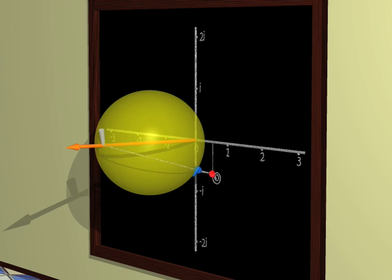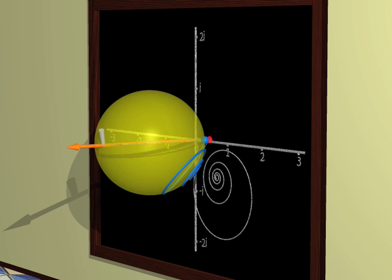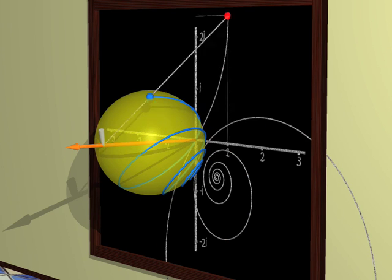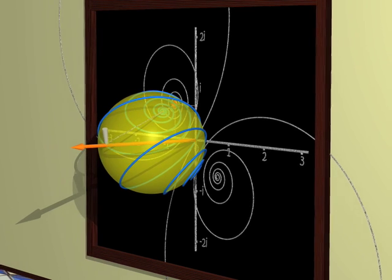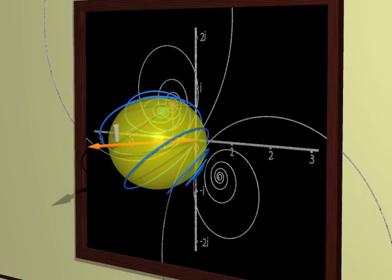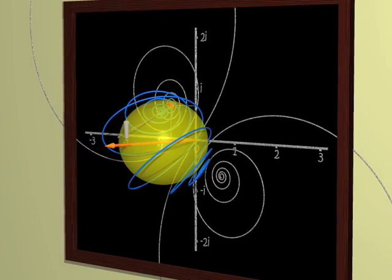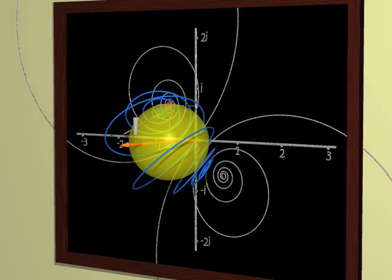Only the north pole of the sphere, I mean the pole from which I'm projecting, has no complex number associated to it. We say that it corresponds to infinity. Therefore, mathematicians say that the sphere is a complex projective line. Why line?